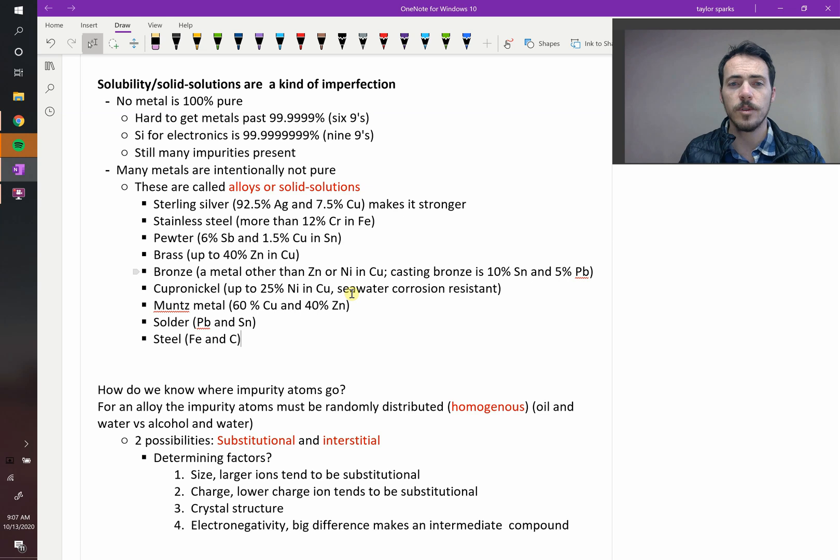There's cupro-nickel, where you have up to 25% of nickel in copper. Why do you do that? Well, because copper would corrode really quickly in seawater, but adding up to 25% of that nickel gives it seawater corrosion resistance. Same thing with Muntz metal.